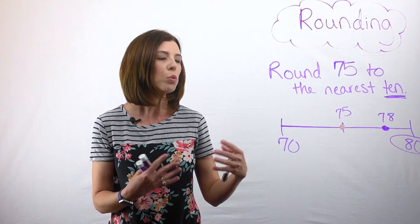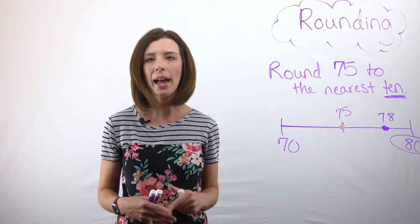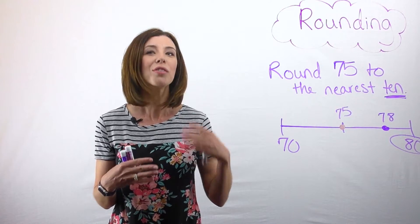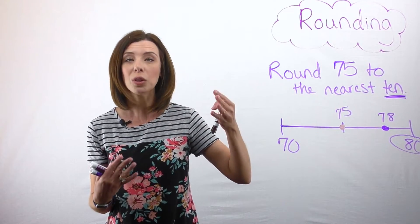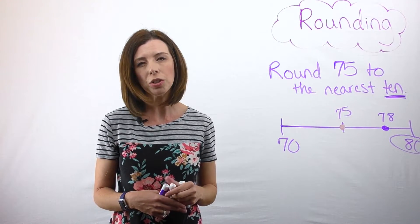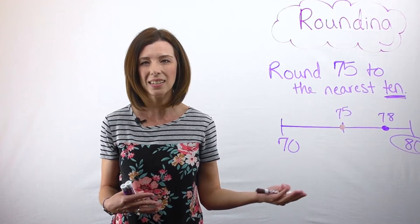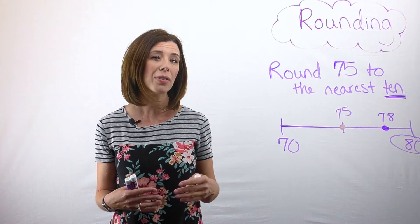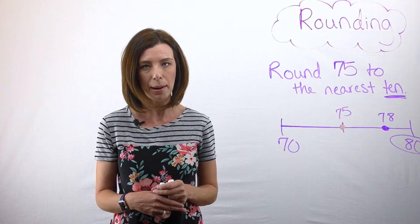So there's this rule that if it falls in the middle, we're going to go ahead and round up, which is why we have the rule: five or higher, round up; four or lower, stays the same. The problem with just teaching children those rules is that they don't see the conceptual point in this. And when we get to decimals and we're rounding to tenths and hundredths, it really becomes a problem.